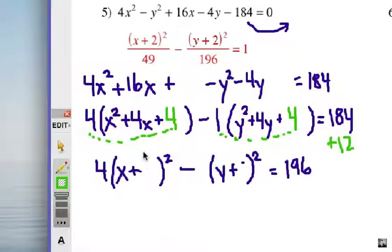Let's factor out our trinomials. Now if we did this right and completed the square correctly, this should be a squared binomial, and it is. x plus 2 squared and y plus 2 squared. All right.